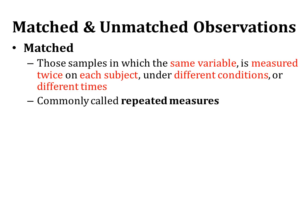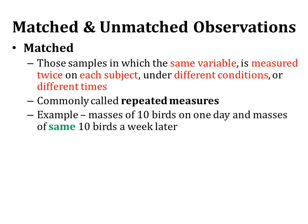These are commonly called repeated measures, because the observation is repeatedly measured. An example is the masses of 10 birds on day one and the masses of the same 10 birds a week later.